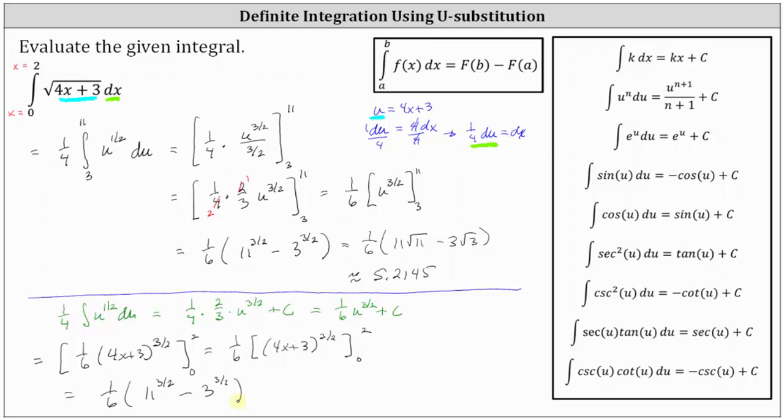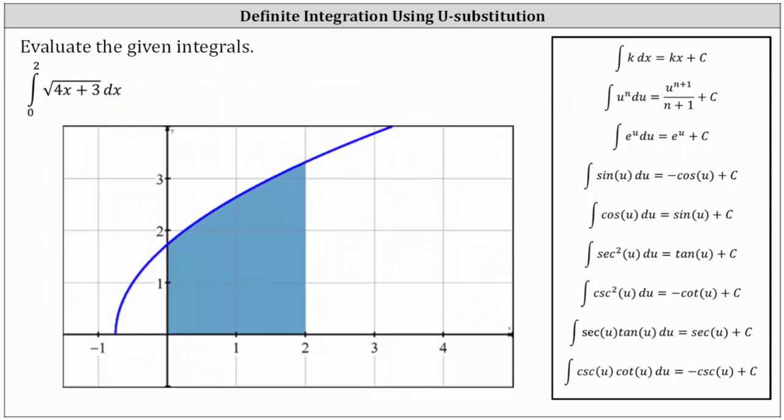And I just wanted to show this because sometimes you will see work for a definite integral written in this form. And finally, before we go, if we take a look at the graph of the integrand function over the closed interval from 0 to 2, notice how the area bounded by the function and the x-axis over this interval is above the x-axis, indicating the value that we found is equal to this shaded area. I hope you found this helpful.